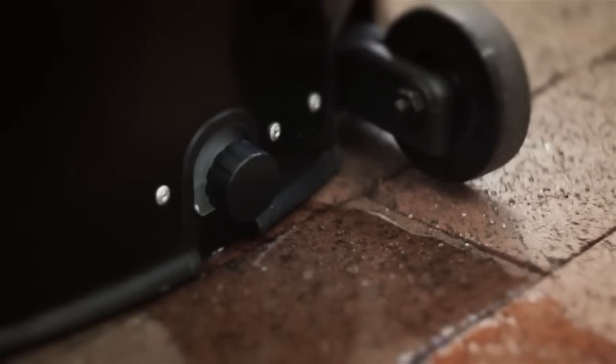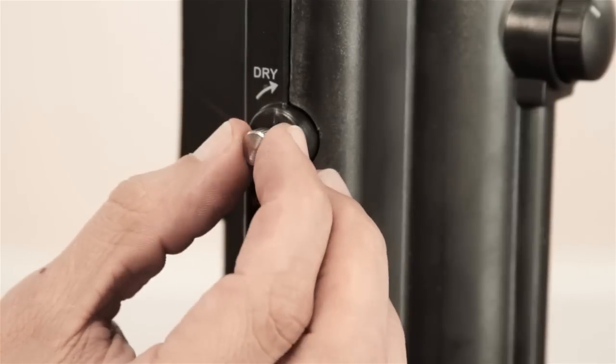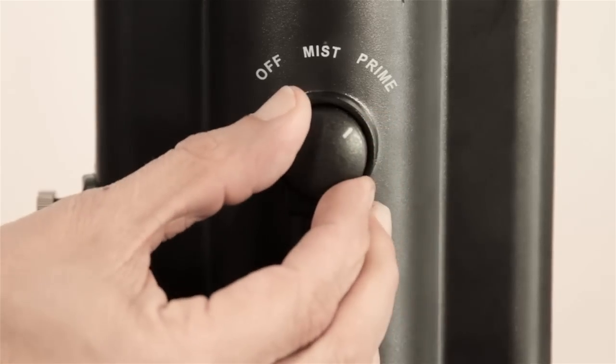To turn the system back on, fill the tank with clean water. Turn the flow control valve until it is fully open and prime the pump before use.